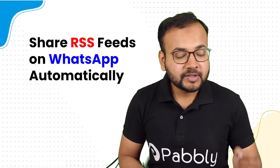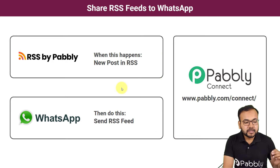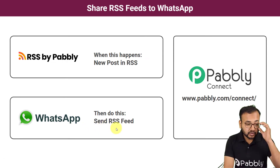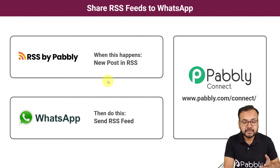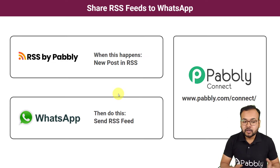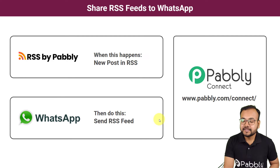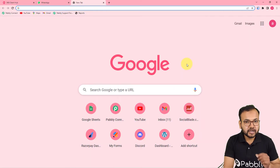This will be the flow of the automation: whenever a new post in the RSS feed is updated on the website, you will receive a message on WhatsApp with the RSS feed's link and other details. This will help you track the website without manually checking for new RSS feeds. To make this happen, we are using Pabbly Connect, an integration and automation tool, and you can set up this automation in just a few steps without any coding skills.